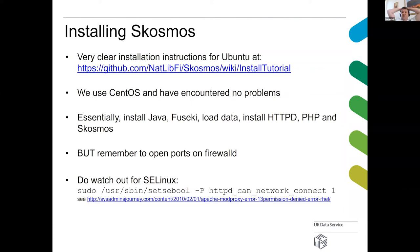The installation instructions on the wiki are for Ubuntu, but we use CentOS at the UK Data Archive and we've been able to install it on CentOS with no particular problems. Essentially to install SKOSMOS, as long as you've got Java, Apache Fuseki — which is basically the interface into the database — you install Apache web server, PHP and SKOSMOS, and you're done. The whole manual installation probably takes less than half an hour and is very well documented on the SKOSMOS wiki. A couple of gotchas if you're installing on Red Hat or CentOS: don't forget to open the ports on the firewall daemon — something I spent a while banging my head against a desk over.